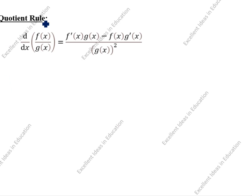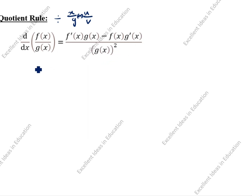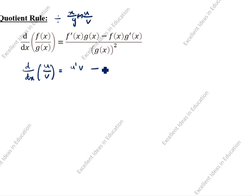Next: quotient rule. Quotient rule is division — u/v. d/dx of [f(x)/g(x)] = [f'(x)·g(x) − f(x)·g'(x)] / [g(x)]². In another method: d/dx of [u/v] = [u'·v − u·v'] / v². This is the formula.